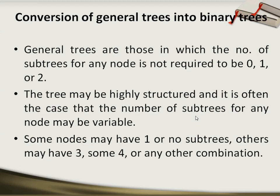The next point is conversion of general trees into binary trees. General trees are those in which any node may consist of a number of subtrees. For example, the root may have one, two, three, four, and so on number of nodes or subtrees attached to it, and hence it is considered a general tree.